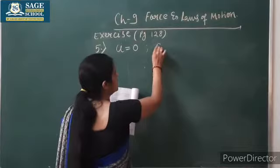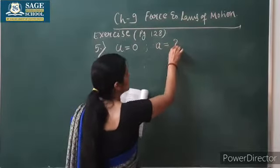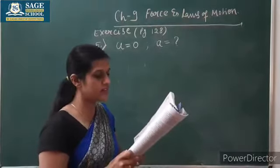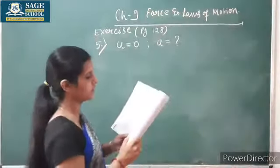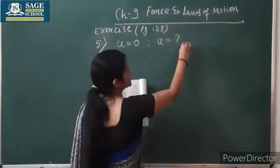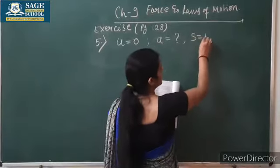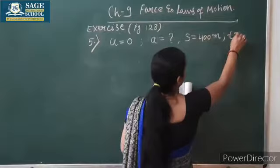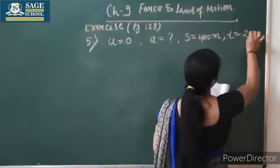Acceleration is given as constant but the value is not given, so you have to determine the acceleration. Then it travels a distance of 400 meters in 20 seconds. What else is given? The distance is given as 400 meters and time is given as 20 seconds.